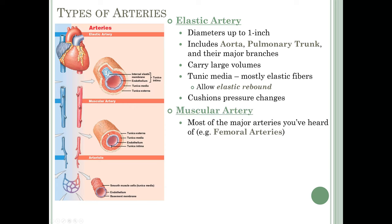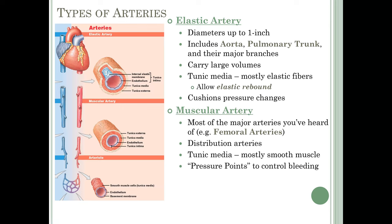Muscular arteries include most of the major named arteries you've heard of, like the femoral arteries, brachial arteries, and mesenteric arteries — your distribution arteries taking blood to different parts of the body. Their tunica media is mostly smooth muscle. Muscular arteries are typically your pressure points: if someone is bleeding uncontrollably, these are the arteries you put pressure on to slow blood loss, where you'd apply a tourniquet or active pressure.